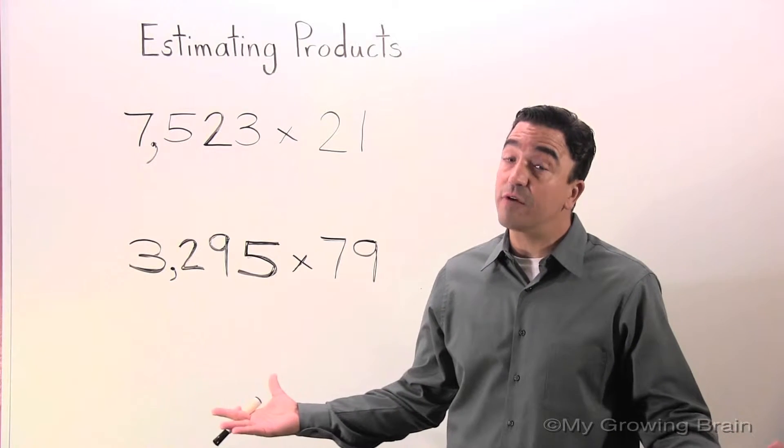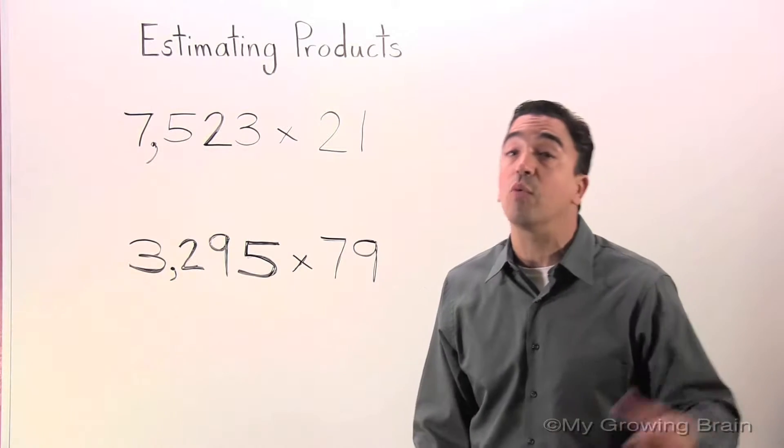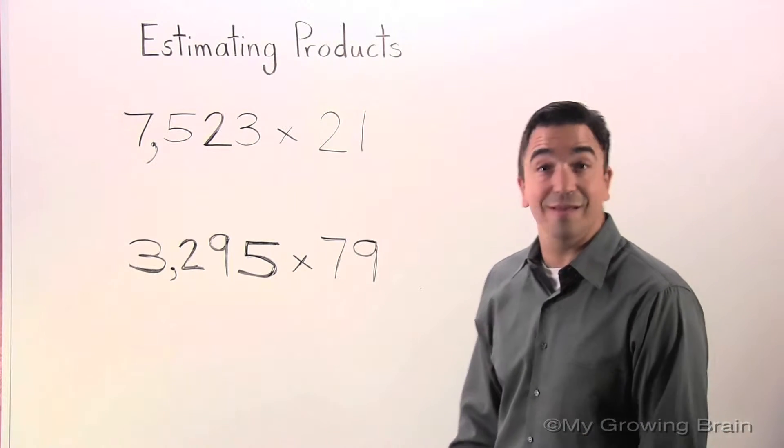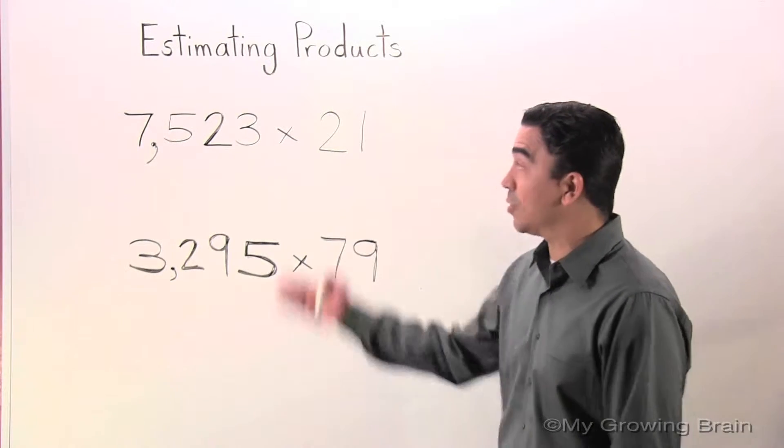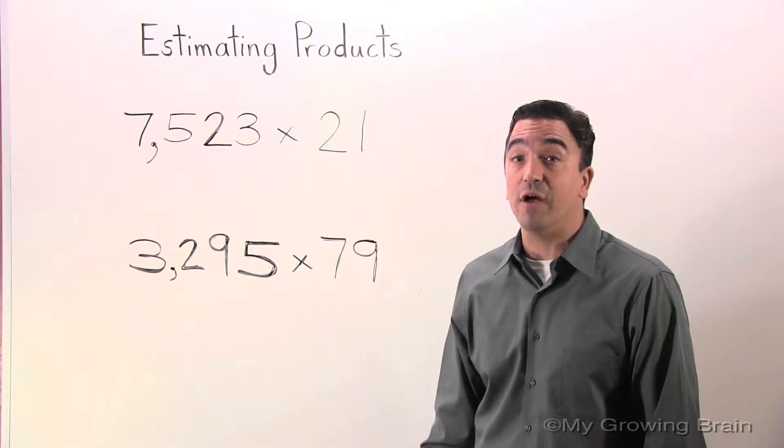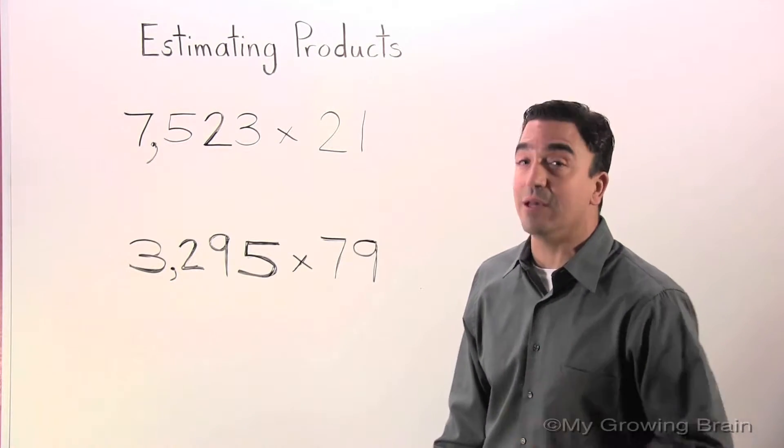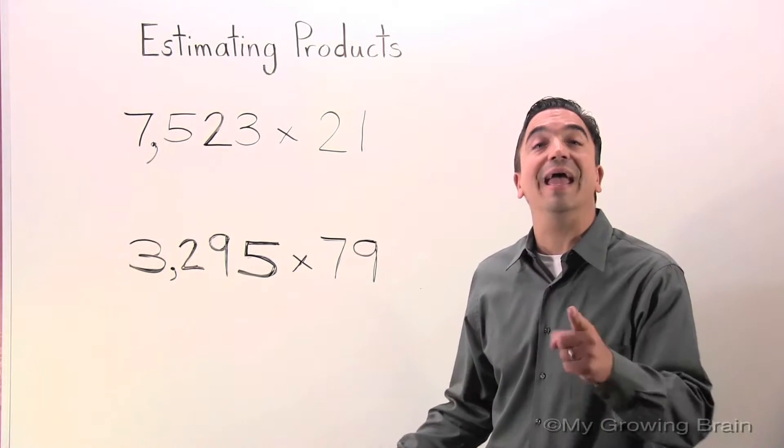Now, if you're having difficulty with rounding, please go back to one of our previous lessons. Here we go. We're going to round 7,523 to the nearest thousand, which would be 8,000.